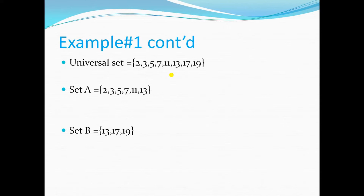The universal set consists of prime numbers less than 20, so we are going to list prime numbers less than 20. Before listing the members, you should know what a prime number is. A prime number is a number that has only two factors: one and itself.